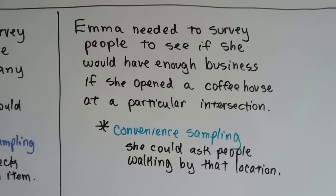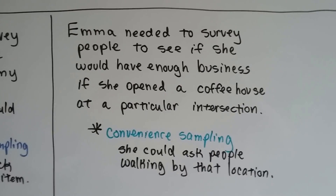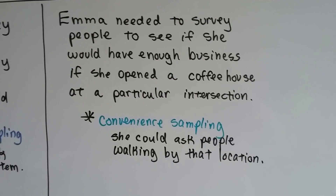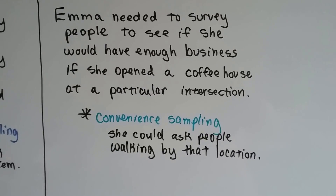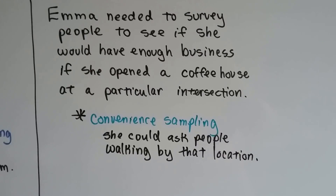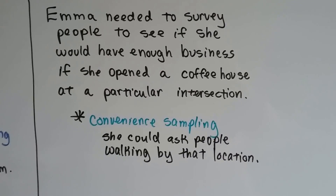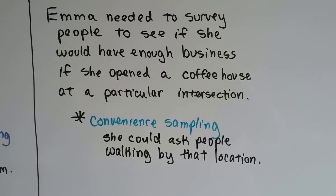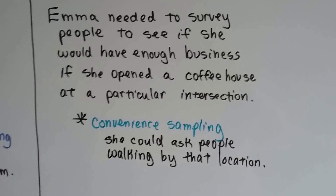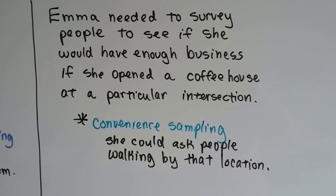Emma needed to survey people to see if she would have enough business if she opened a coffee house at a particular intersection. She used convenience sampling so that she could ask people walking by that location how they felt about a coffee house being there.